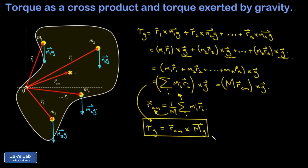This is an r cross f where the force is the total weight of the body Mg, and the position vector is the position of the center of mass. Drawing the total weight vector located at the center of mass, the total torque exerted by gravity can be found by pretending all the mass is located at the center of mass.